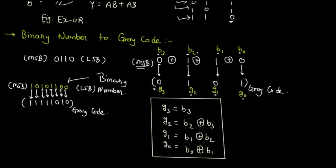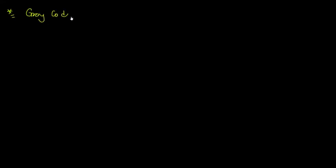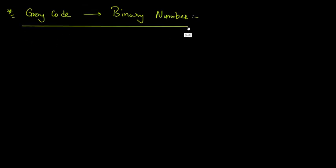Now let us discuss how to convert a grey code into a binary number. The next process is the conversion of grey code to binary number. The conversion process is very similar to the binary to grey code process.